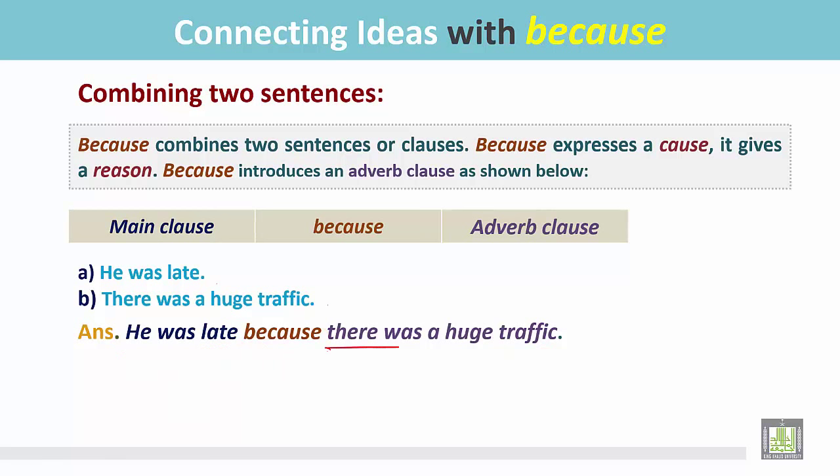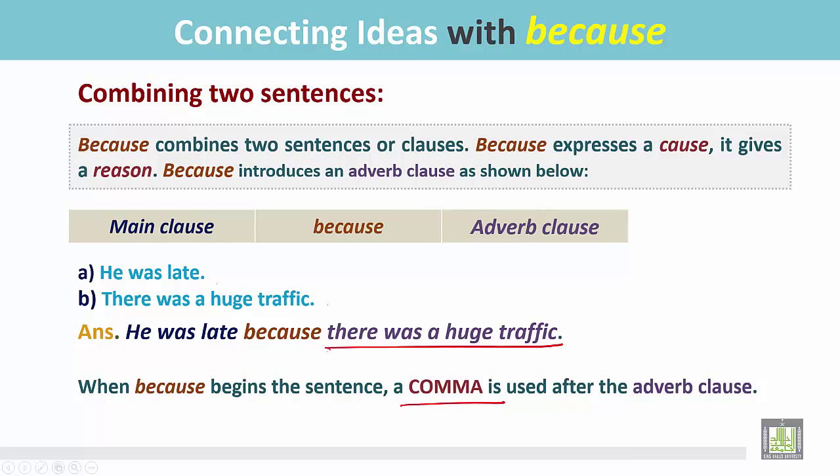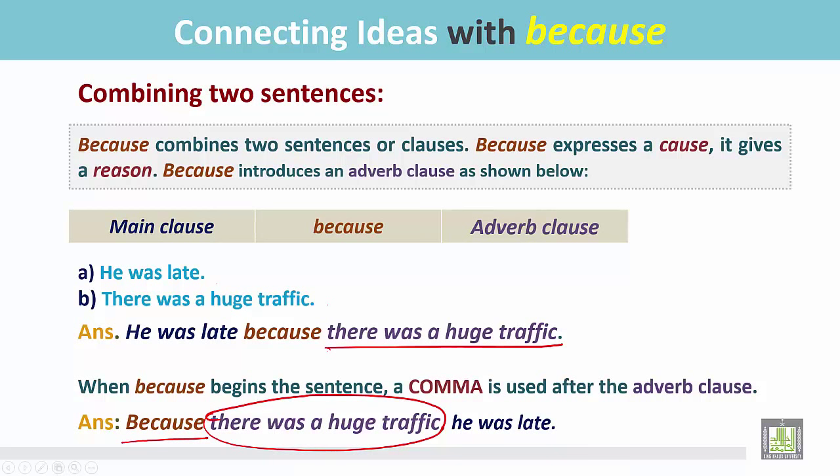When because begins the sentence, a comma is used after the adverb clause. Because there was a huge traffic. Here we start the sentence with because, and we write the cause here. And after that, we put a comma. And then write the main clause.